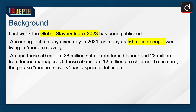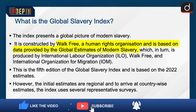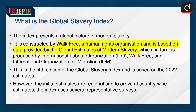The phrase 'modern slavery' has a specific definition. The Global Slavery Index presents a global picture of modern slavery. It is constructed by Walk Free, a human rights organization, and is based on data provided by the Global Estimates of Modern Slavery, which in turn is produced by the International Labour Organization, Walk Free, and the International Organization for Migration. This is the fifth edition of the index, based on 2022 estimates. However, the initial estimates are regional, and to arrive at country-wise estimates, the index uses several representative surveys.